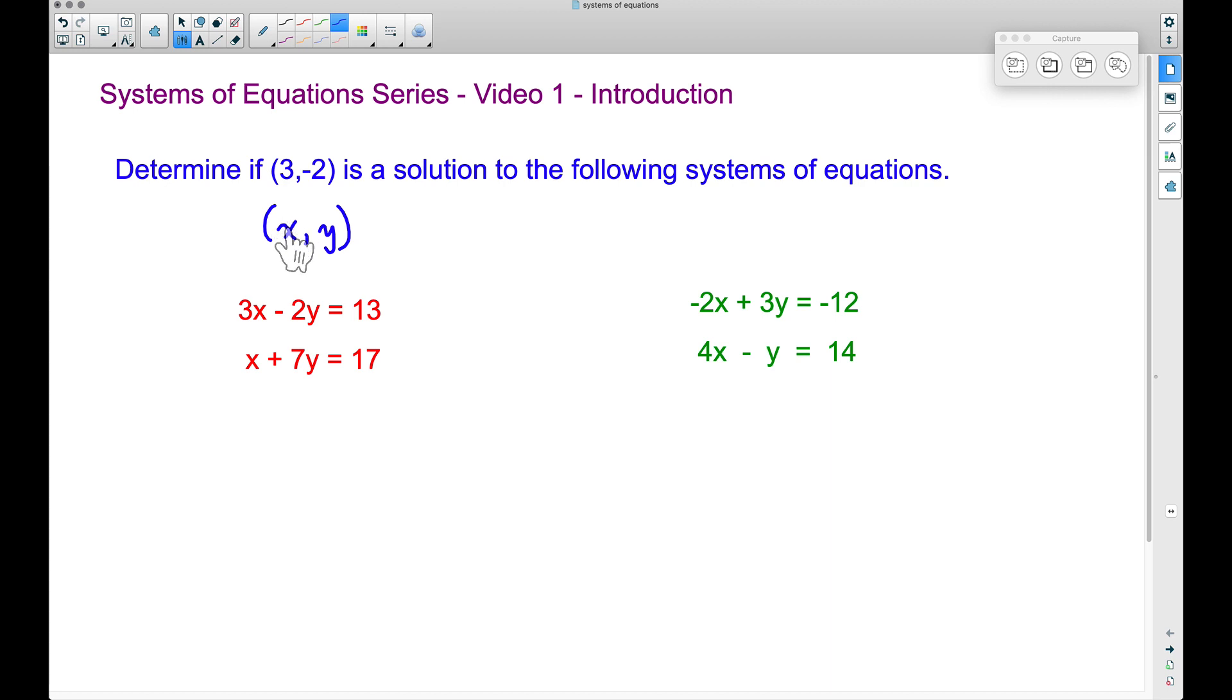So right now, I'm saying x is three and y is negative two. We want to determine if (3, -2) is a solution to this system of equations, and all we have to do is take the three,